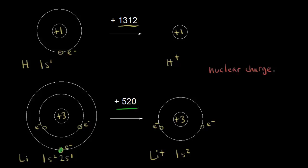Let's look at hydrogen first. Hydrogen has a plus one charge in the nucleus, and that one electron is pulled to the nucleus by that positive charge. For lithium, it's plus three in the nucleus — a greater nuclear charge. Just thinking about nuclear charge alone, you might think that lithium's outer electron is pulled in even more than hydrogen's, since plus three is greater than plus one. So just from nuclear charge, you might expect lithium to have a higher ionization energy.